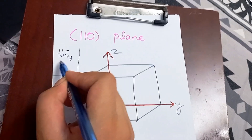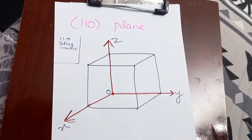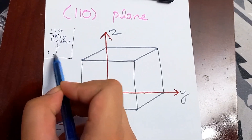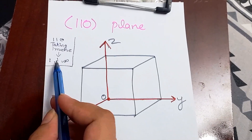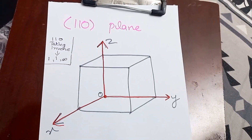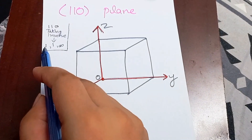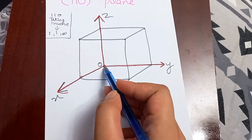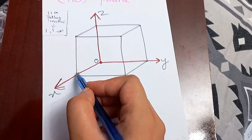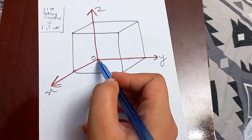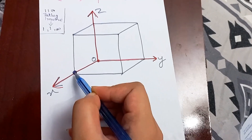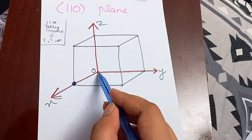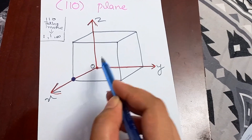Taking the inverse gives us the actual intercepts of the plane, which helps us draw them inside the cube. Inverse of 1 is 1, inverse of 1 is again 1, and inverse of 0 is infinity. So X intercept is 1, Y intercept is 1, and Z intercept is infinity. We first draw the points that are not infinity. Since X intercept is 1, we go from the origin to the other corner of the unit cell along the X direction — that is one point on the plane.